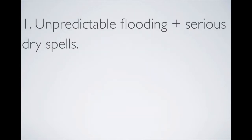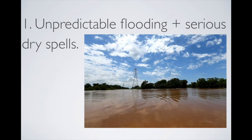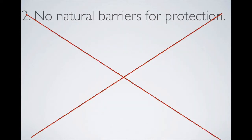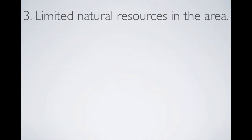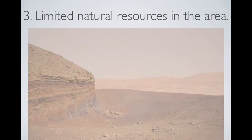However, this area did have three major disadvantages. The first was unpredictable flooding plus serious dry spells — so even though there were two great rivers, it was very hard to foresee how much or how little flow they would have. The second big problem was no natural barriers — it's a very bare area without any natural forests or mountains for protection.